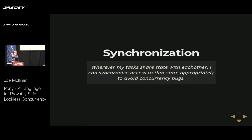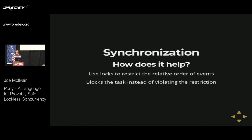Synchronization: wherever my tasks share state with each other, I can synchronize access to that state appropriately to avoid concurrency bugs. Using synchronization primitives like locks allows us to impose restrictions on the relative order of specific groups of operations within concurrent tasks. These primitives force tasks to wait or block for availability. A lock is acquired before doing work on shared state, then released when done. If another task holds the lock, you wait idle — and if lots of other tasks are waiting for the same lock, you could be waiting quite a while. That's a classic bottleneck scenario.